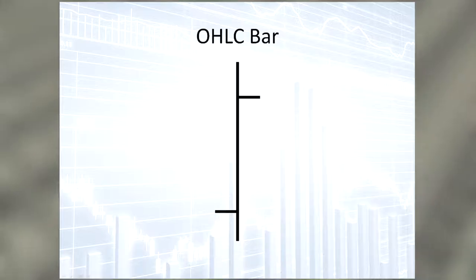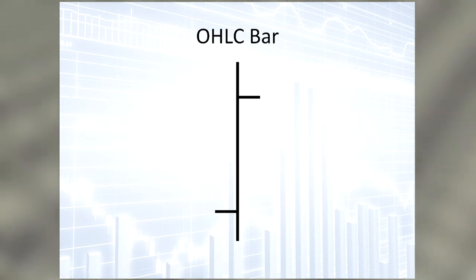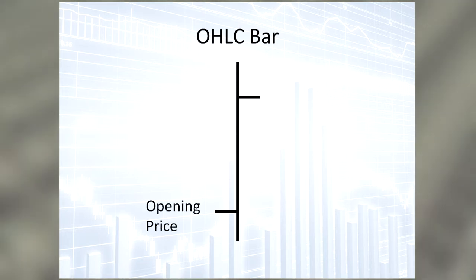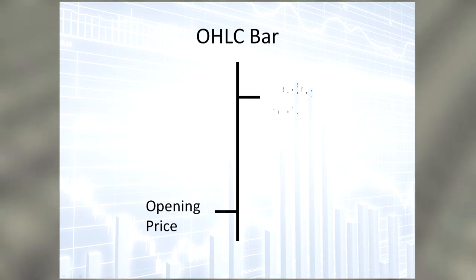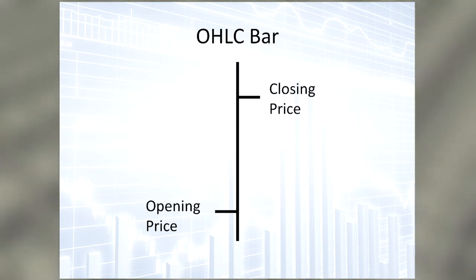Basically, you have a vertical bar representing the movements of a stock price over a certain time period. There are two dashes protruding from either side of the bar. The dash on the left represents the opening price of a stock, and the dash on the right represents the closing price of that stock over the time period, whether it is a minute, an hour, a day, whatever.